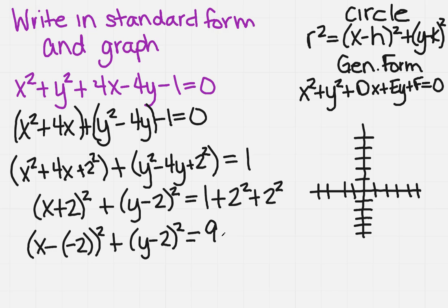Now, in the formula, I need to find out what r is. So I need to figure out what squared is 9. So this is going to be x minus a negative 2 squared plus y minus 2 squared equals 3 squared.